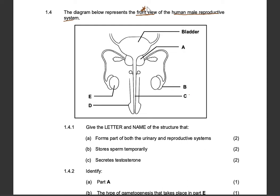The first question asks us to give the letter and name of the structure that forms part of both the urinary system — for producing and releasing urine — and also the reproductive system. The most obvious answer is C, because C is the urethra, which is where urine passes through to the exterior, and also where semen passes through.